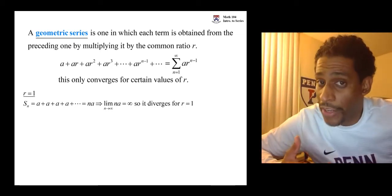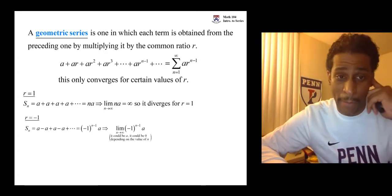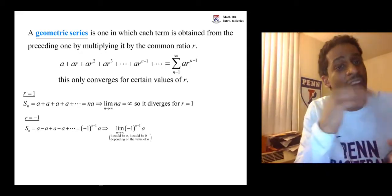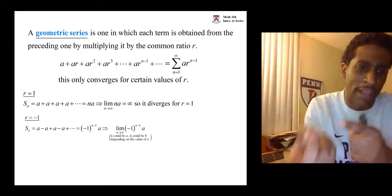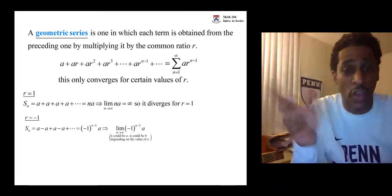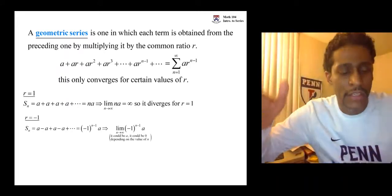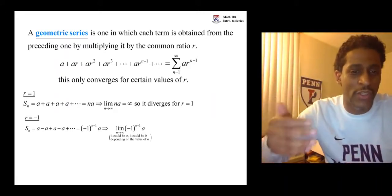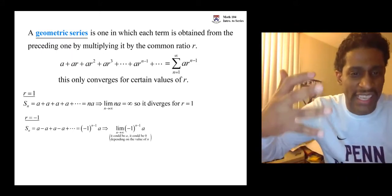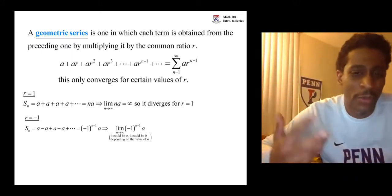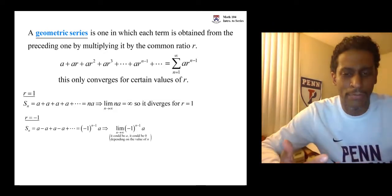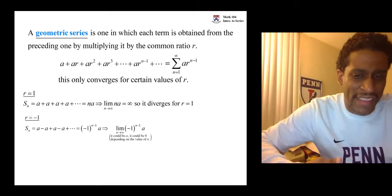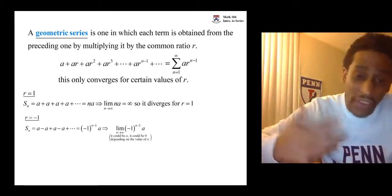What about when R equals negative 1? So then what happens is each term is obtained from the other one by multiplying by negative 1. So you start with A and you have negative A, and then from there you have an A and negative A. And it just alternates back and forth forever. You take the nth partial sum, you don't know exactly where you're at on the sequence, so you generically write it as negative 1 to the N minus 1. But as N goes to infinity, we don't know if that's going to be A or negative A.